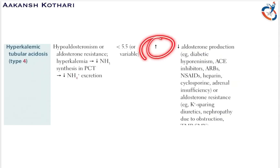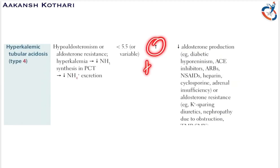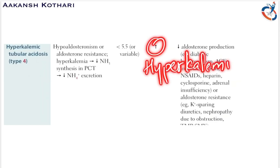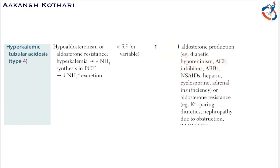The serum potassium concentration rises, making it a hyperkalemic state. The urine pH is usually less than 5.5 but can be variable. The causes of type 4 RTA include decreased aldosterone production — for example, diabetic hyporeninism, ACE inhibitors, or ARBs (angiotensin receptor blockers) — as well as NSAIDs, heparin, cyclosporin, and adrenal insufficiency.